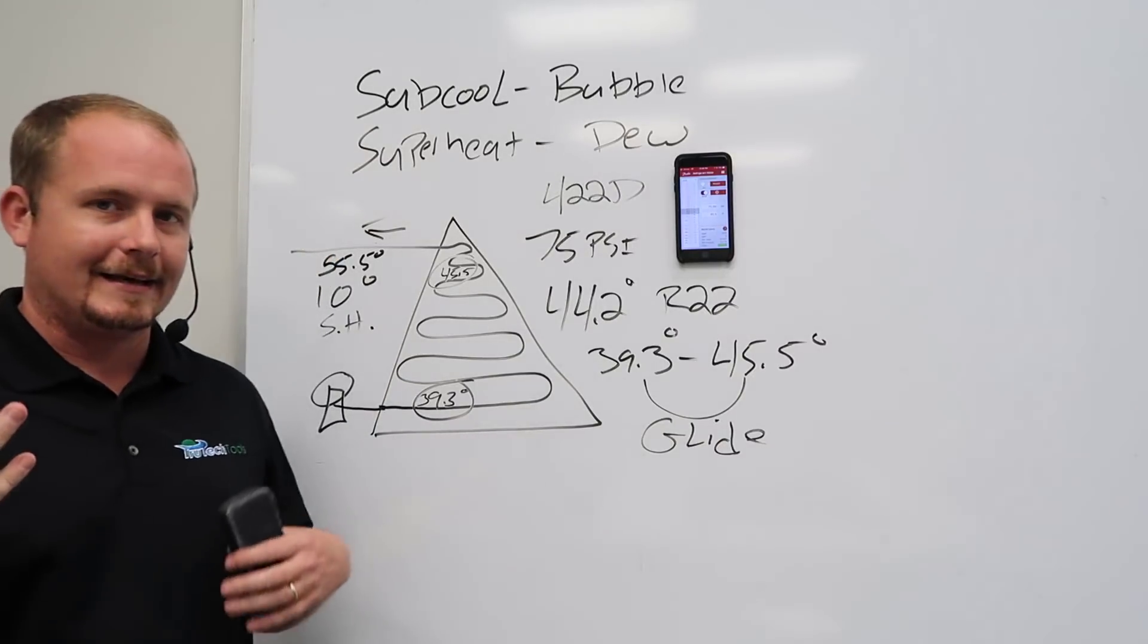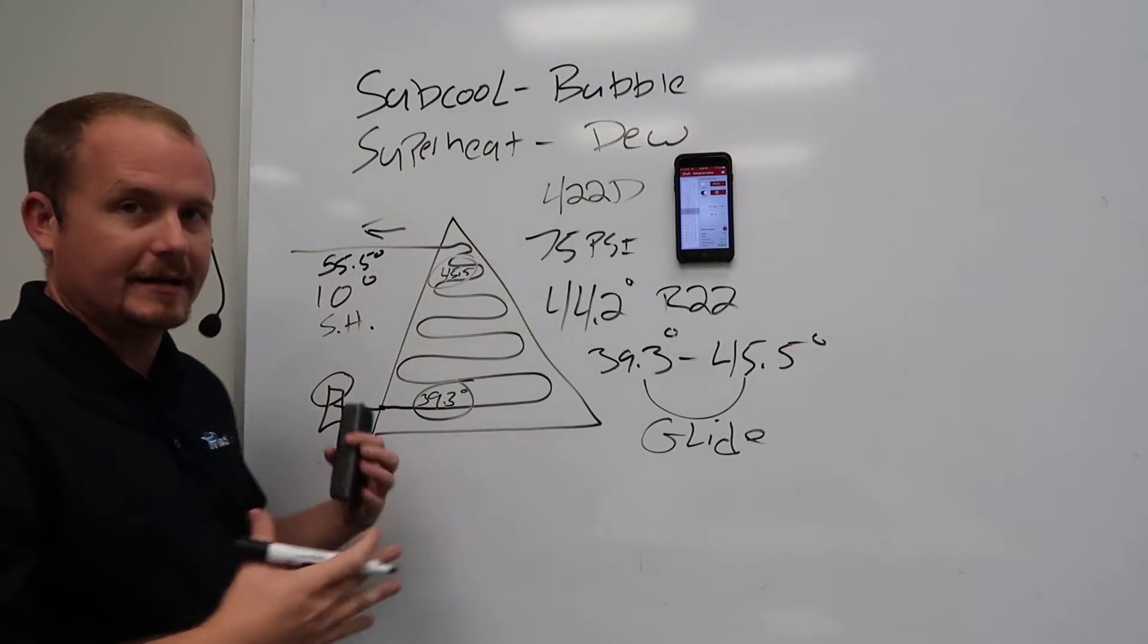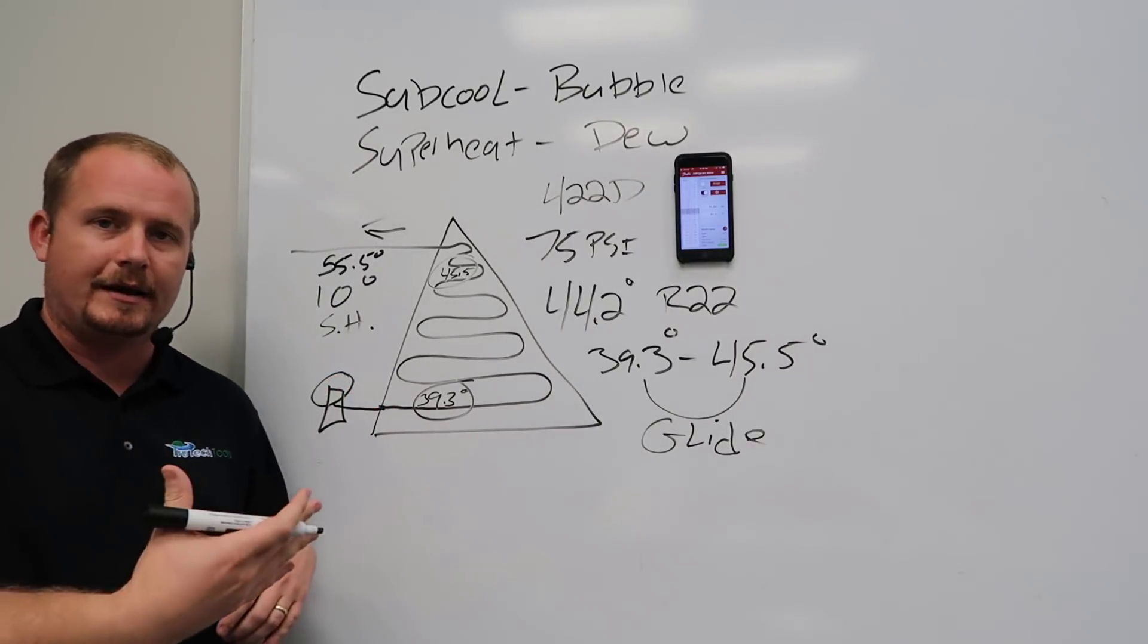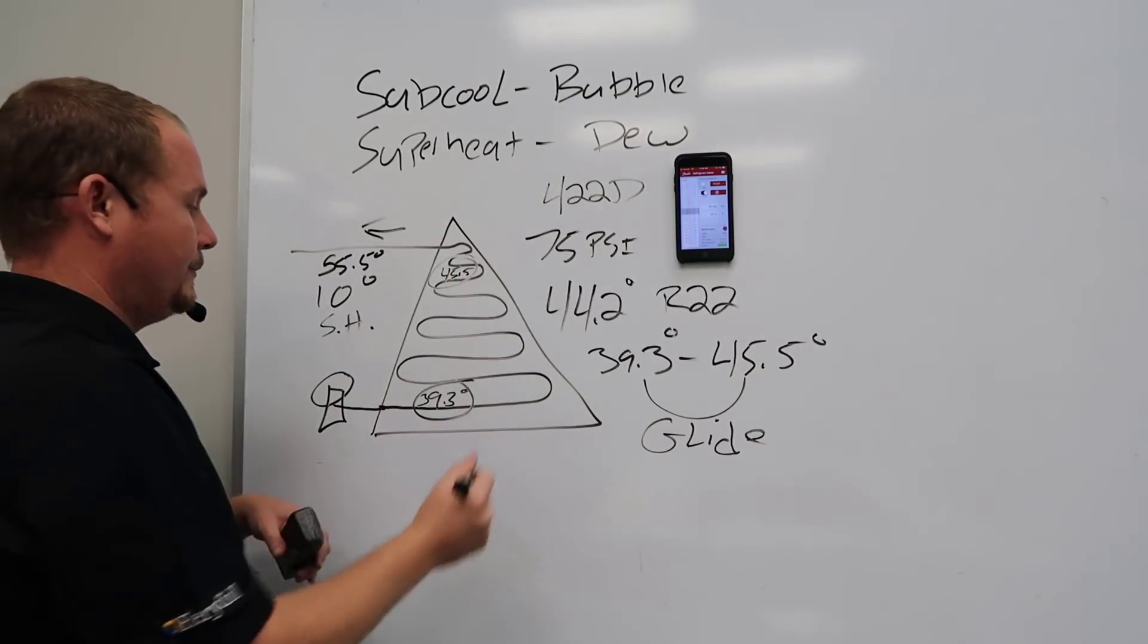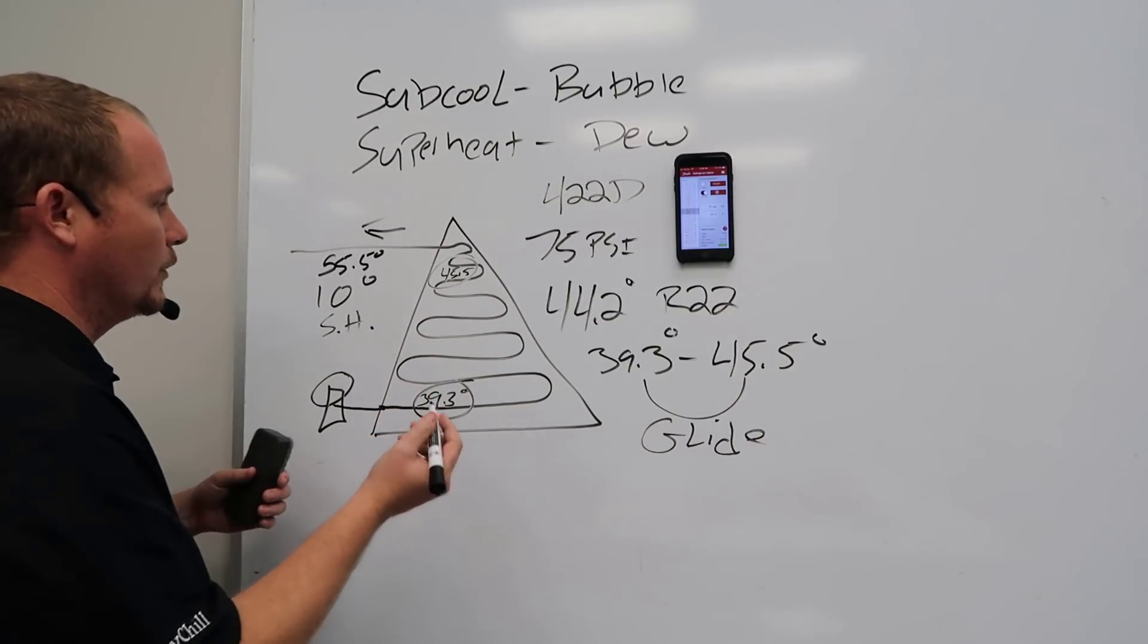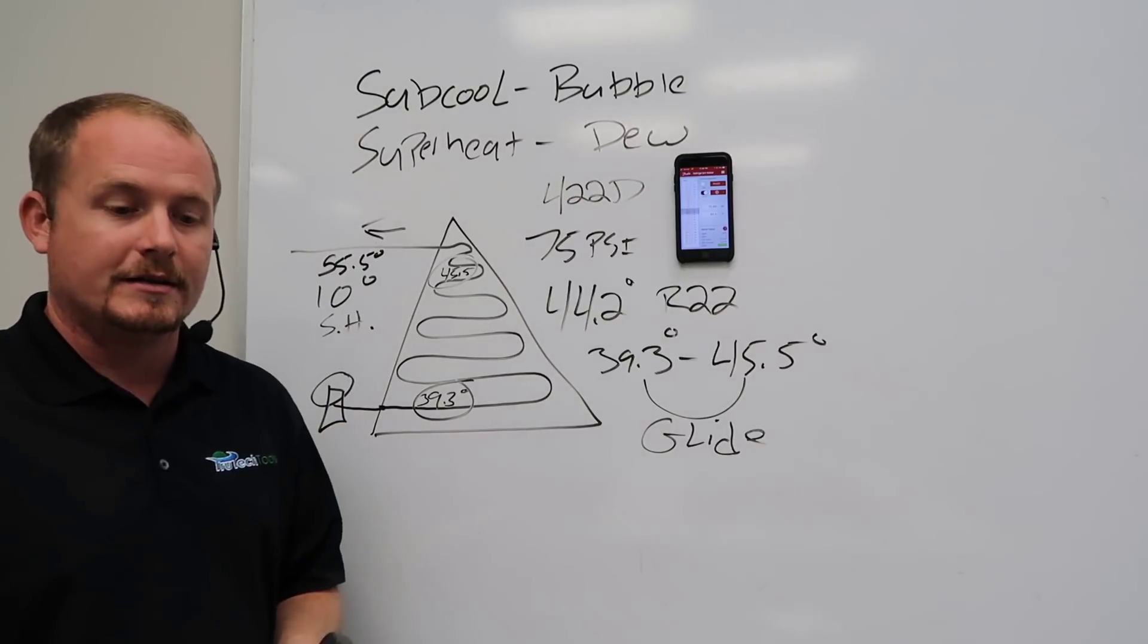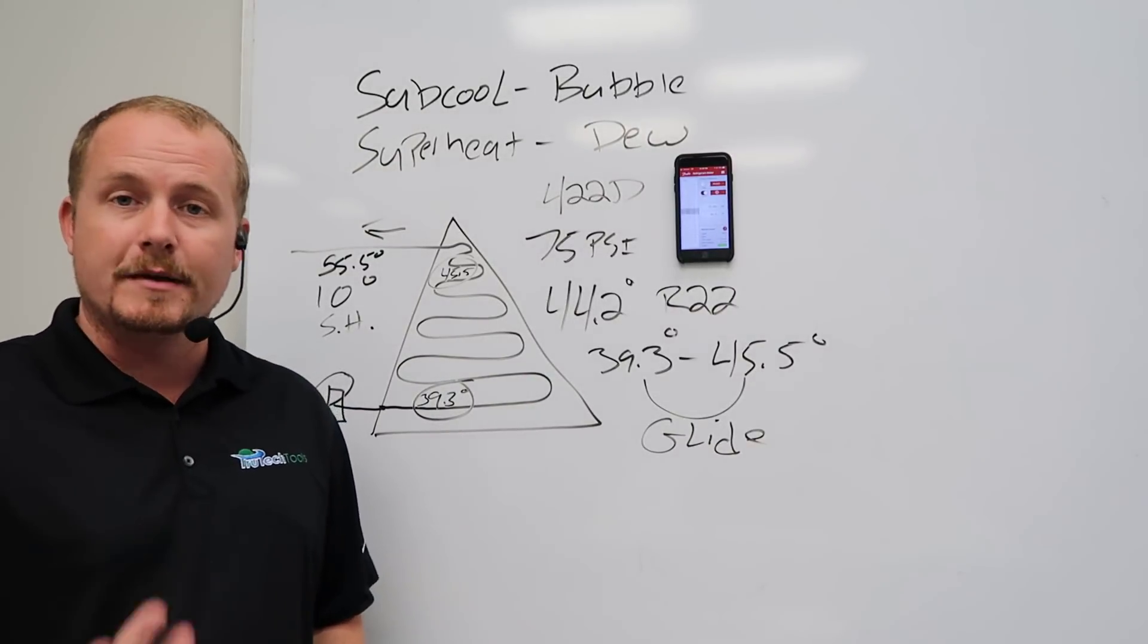But when we calculate things like design temperature difference, say if I was wanting to calculate what exactly should this pressure be based on the indoor temperature—we talk about this in the five pillars, we talk about this in checking a charge without gauges—there's a lot of cases where we want to anticipate what the pressure will be in the system for diagnostic purposes. Well, what temperature is in the evaporator coil? Is it 39.3 or is it 45.5? Well, it's both, right? So what do we do in order to calculate this design temperature difference? Or what do we actually say our boiling temperature is? This is where we come up with an average temperature, an average evaporator temperature, or average saturation temperature, or another term they'll use is midpoint.